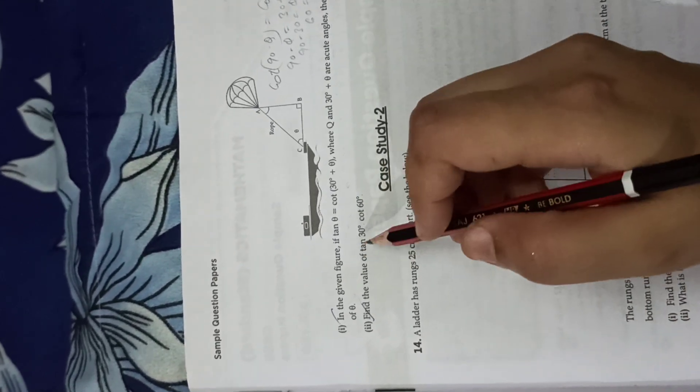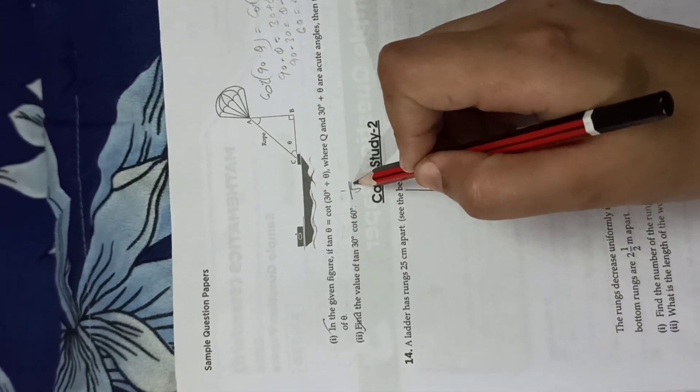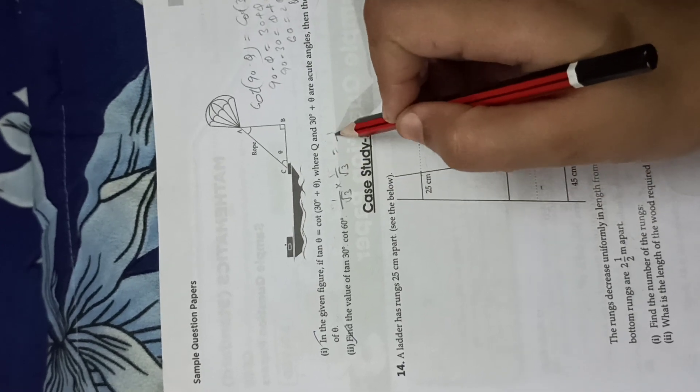Now we have tan 30 and cos 60 values. Tan 30 is 1 by root 3. Cos 60 is also 1 by 2. Multiply them, 1 by 3 is the answer.